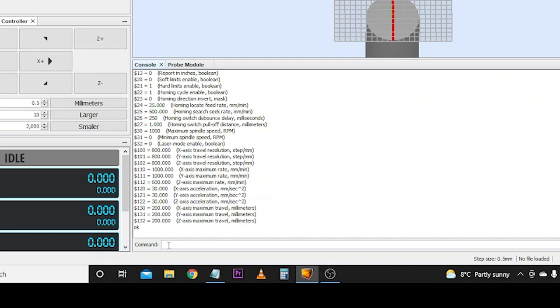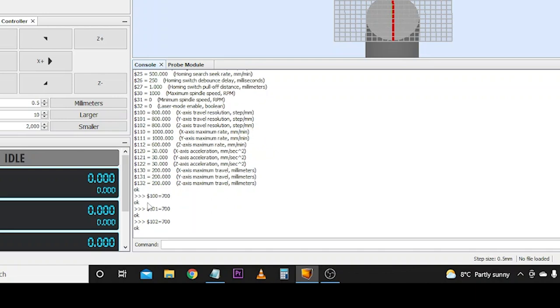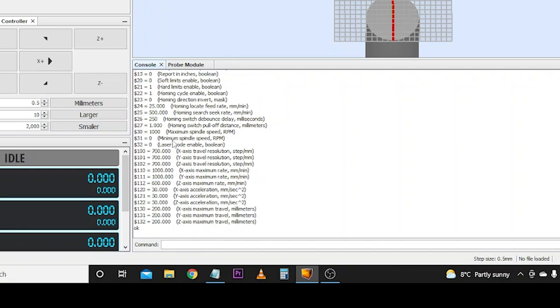To enter in values, you simply type the value you want to change. Here we have $102 equals and then the new value you want to input and press enter. If we hit $$ again and hit enter, we will see these have now been all refreshed to 700. You don't need to do this. This is just for the purpose of the video and emphasizing the changes we're about to make with these settings.